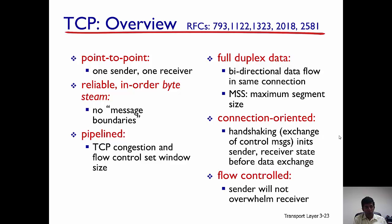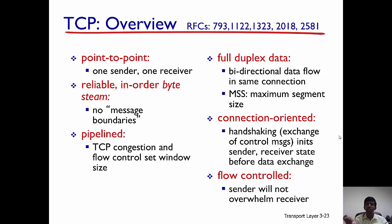TCP also allows for full-duplex communication, which means that both parties involved in this connection-oriented protocol can send data to each other — it allows for bi-directional data flow. Both parties can act as both senders as well as receivers. The maximum size of the segment that can be sent using TCP is called MSS, and we'll come to this later.